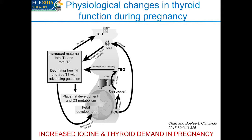A further aspect to consider is that the placenta is very rich in iodothyronine deiodinase, which will metabolize maternal thyroid hormones. But despite this, the fetus still has to have sufficient thyroid hormone supply, because during the first 20 weeks of pregnancy the fetus is entirely reliant upon the mother's thyroid hormone production for normal development. There is therefore no doubt that there is an increased iodine and thyroid demand in pregnancy.